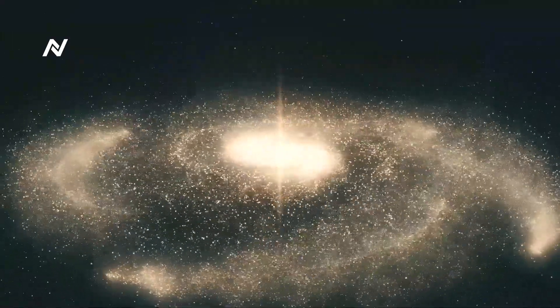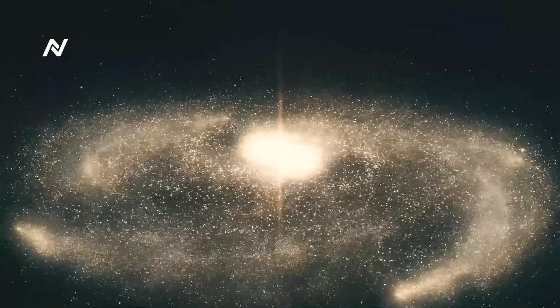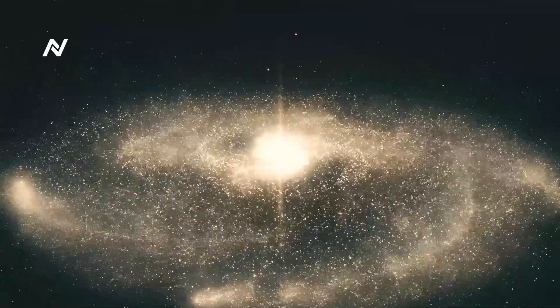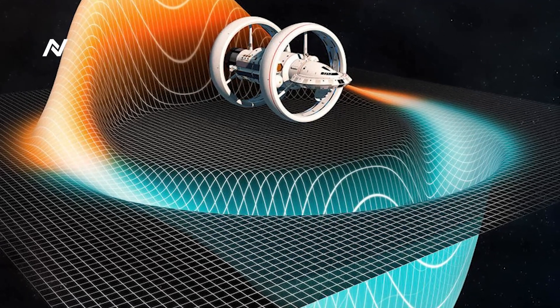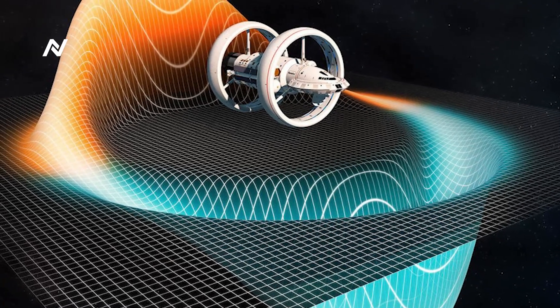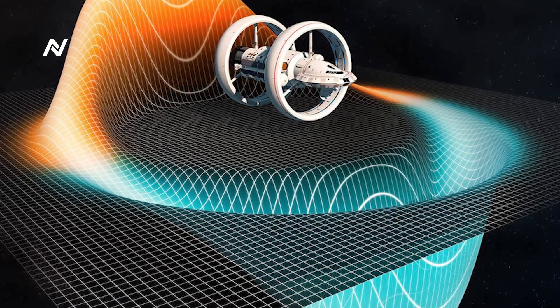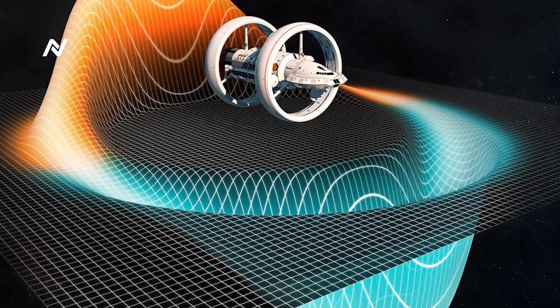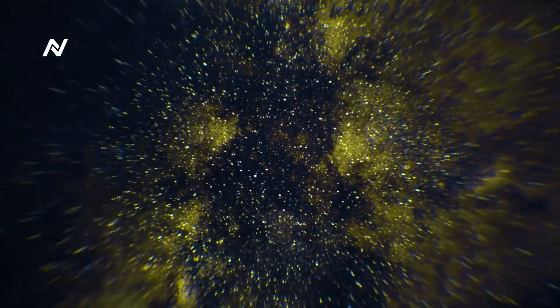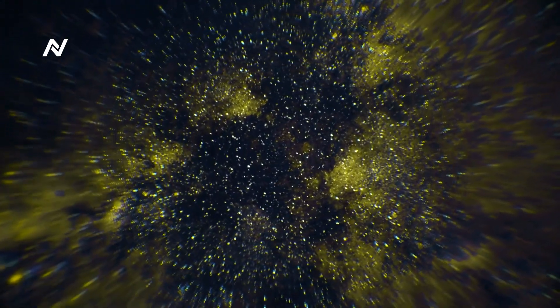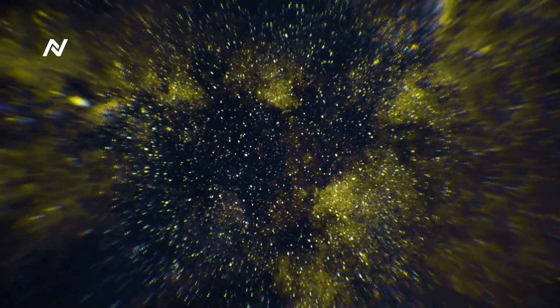Instead of propelling a spacecraft through space at faster-than-light speeds, the warp drive creates a bubble of spacetime around the ship. This bubble would compress the space in front of the ship and expand it behind, essentially bending spacetime itself. The ship inside the bubble would be stationary relative to the space around it, but would be carried along by the warping of spacetime.